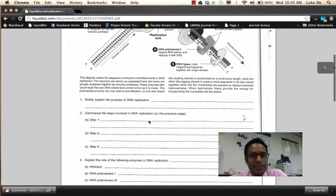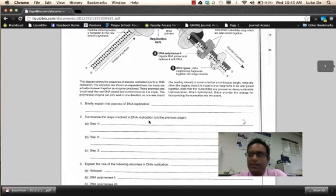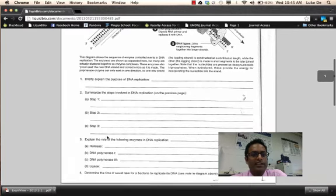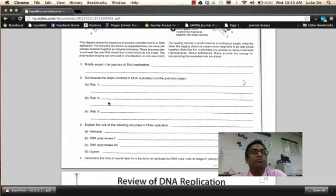All right. Summarize the steps involved in DNA replication. Step one, unwind the DNA strand. I'll buy that. Step two, create the DNA segments. Sure. Step three? Put them together. So glue them together with what? Ligase. Ligase and replace the RNA nucleotides, right?